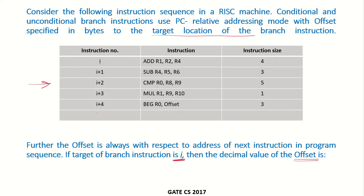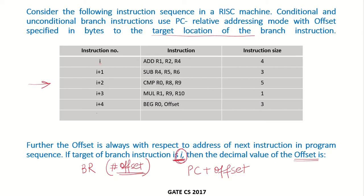In PC relative addressing mode, if there is any branch instruction, the offset is added to the PC value to get the address of the next instruction that has to be fetched. So here they are saying that the target of the branch instruction is I. This is the branch instruction — the offset is given over here — and the target of this branch instruction is I. That means after execution of this instruction, the next instruction has to be fetched from the address of instruction I.